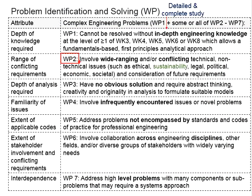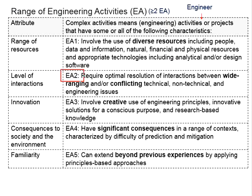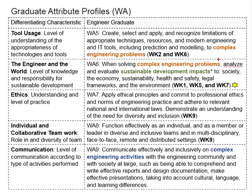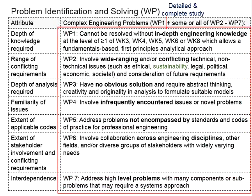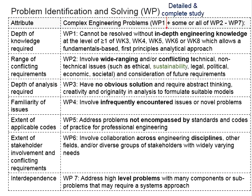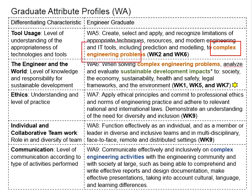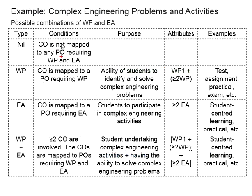The attributes for complex engineering activities are different from the attributes for complex engineering problems, except WP2 and EA2, which look similar, but the others are different. Complex engineering problems are looking into the ability of students to analyze and solve the problems. They have established quite thorough definitions in terms of complex engineering problems. Knowing that complex engineering problems and complex engineering activities are mutually exclusive, it is possible for these two to be separated.